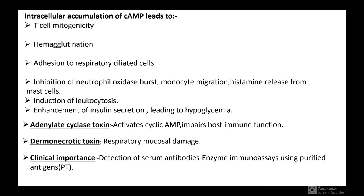Intracellular accumulation of cyclic AMP from pertussis toxin leads to T cell mitogenicity, hemagglutination, adhesion to respiratory ciliated cells, inhibition of neutrophil oxidative burst, monocyte migration, histamine release from mast cells, and induction of leukocytosis. Enhancement of insulin secretion leads to hypoglycemia. Adenylate cyclase toxin activates cyclic AMP and impairs host immune function. Dermonecrotic toxin causes respiratory mucosal damage. Detection is by enzyme immunoassay using purified antigens.